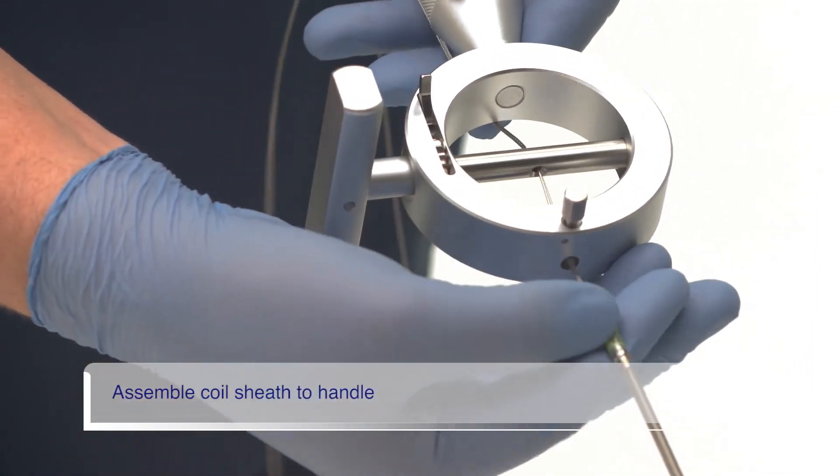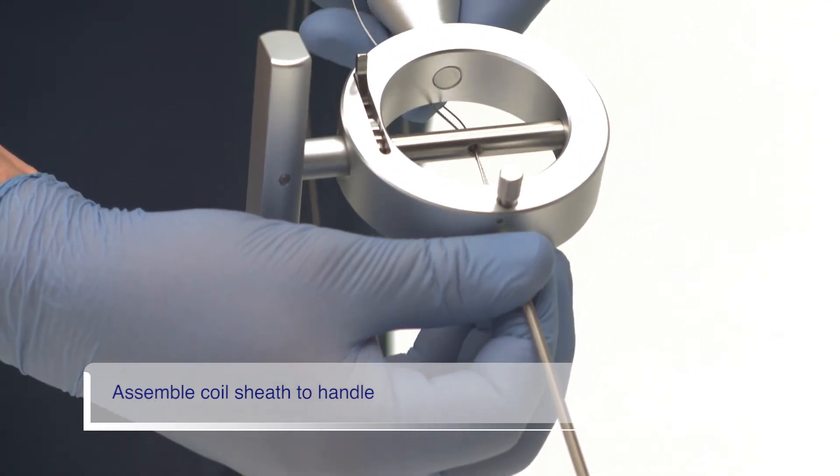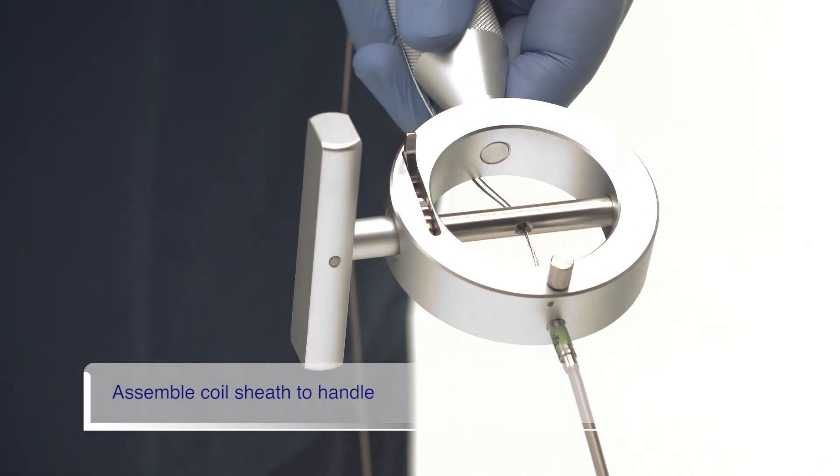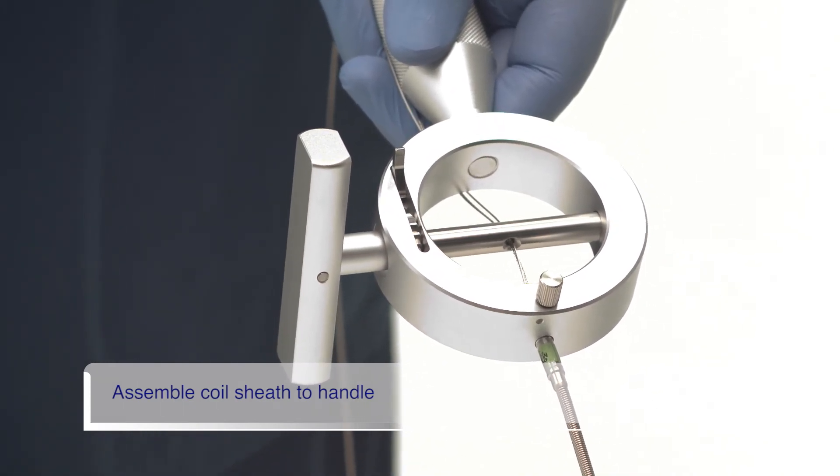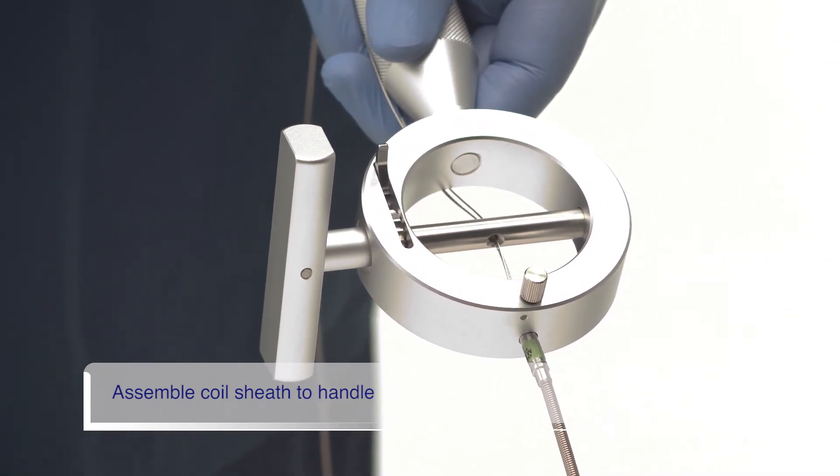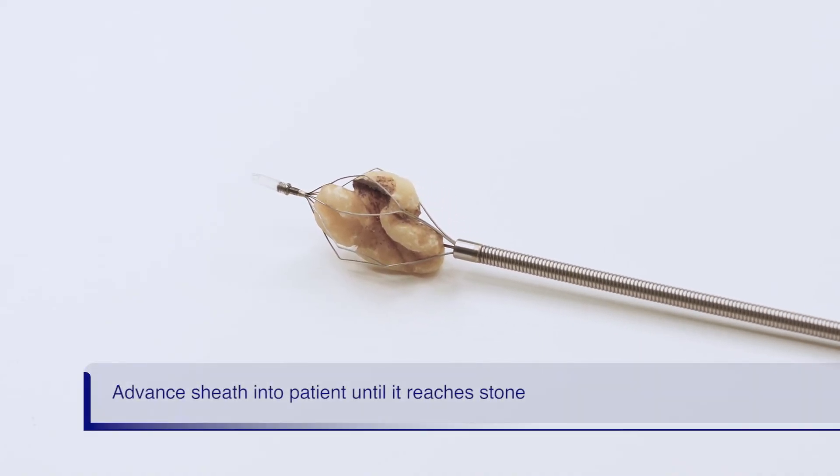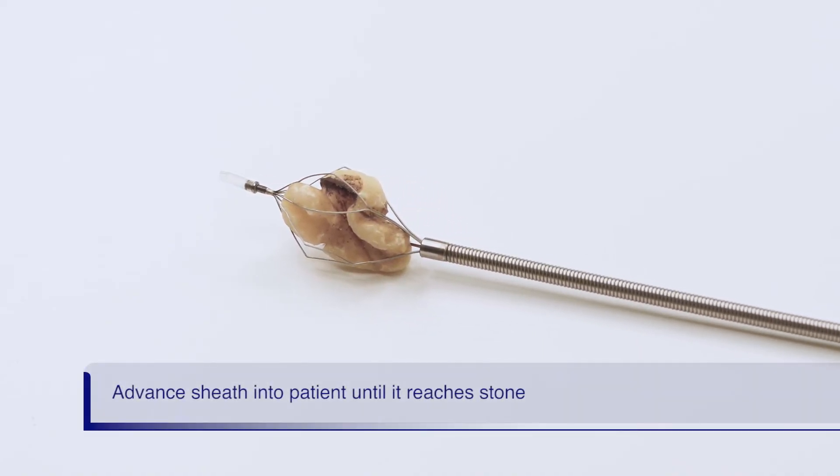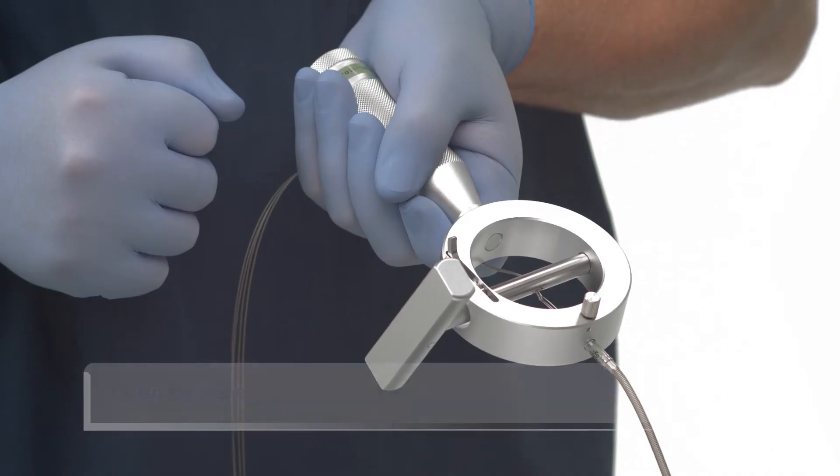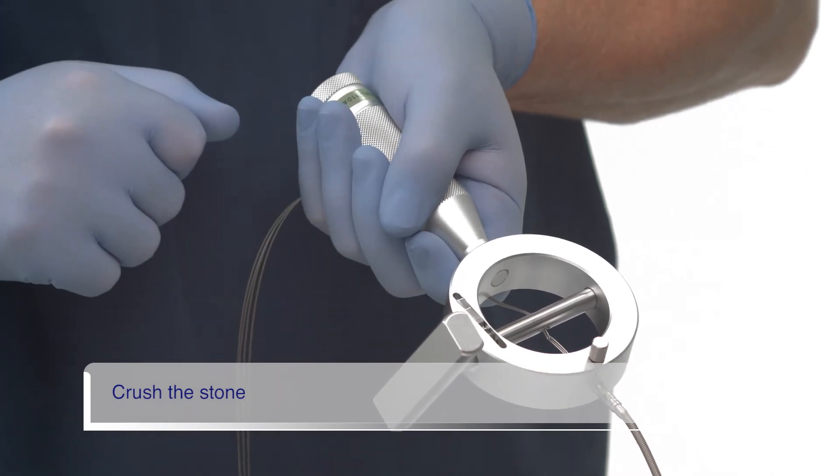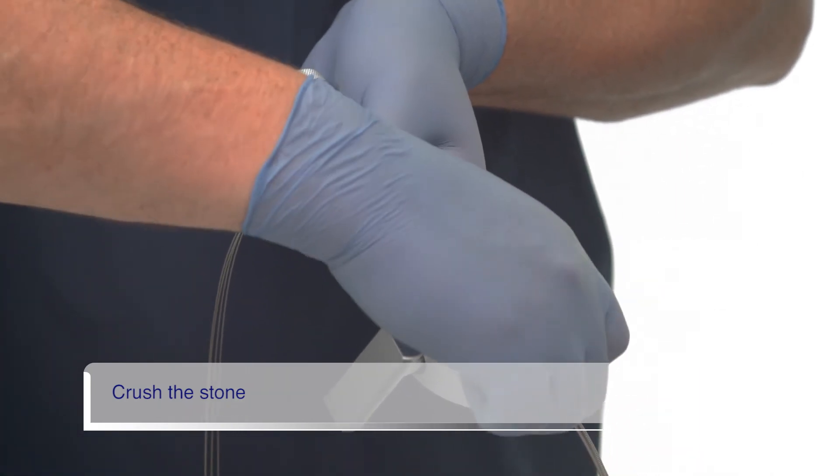Insert the green proximal end of the coil sheath into the hole at the top of the emergency lithotriptor handle. Lock the sheath in place by turning the thumb screw clockwise as shown. Confirm the sheath has reached the stone. Ensure that the ratchet is in the locked position and confirm the coil sheath is locked into the handle.